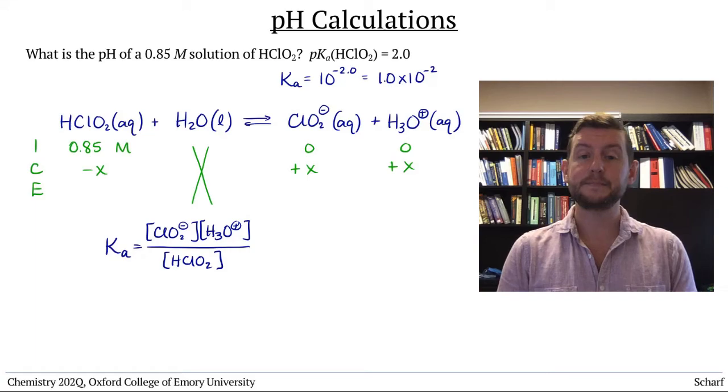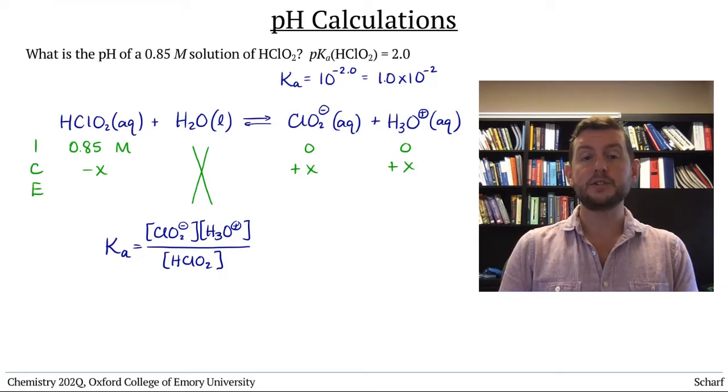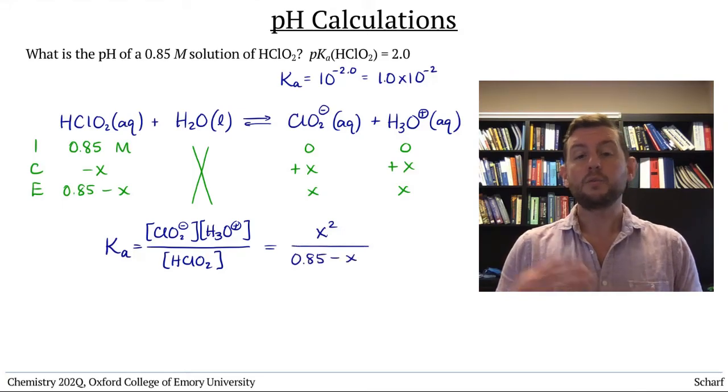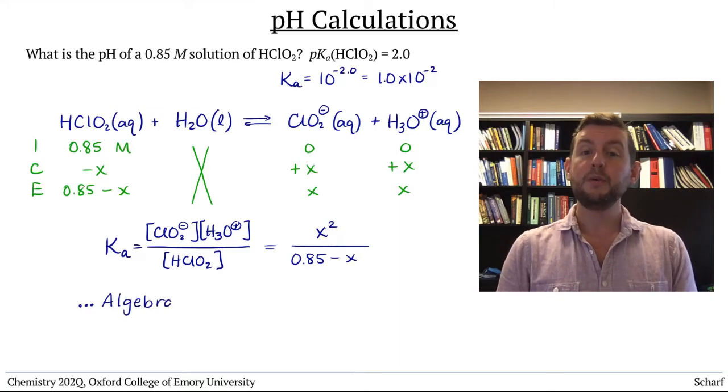At equilibrium, the concentrations are 0.85 minus x, x, and x. So we plug these values into the equilibrium expression. Rearranging and using the quadratic equation to solve for x, we find that it equals 0.0873.